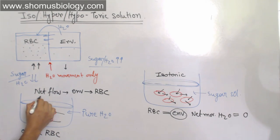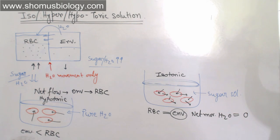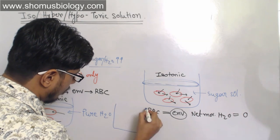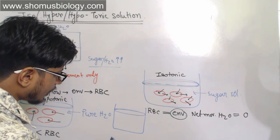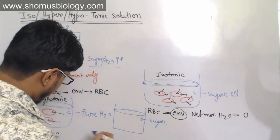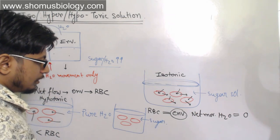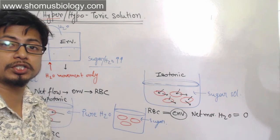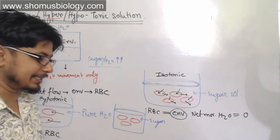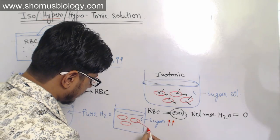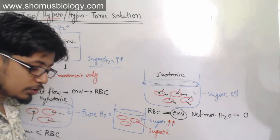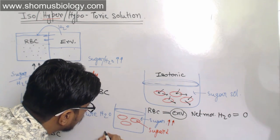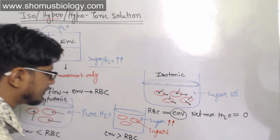That's regarding hypotonic solution. Now for a third occasion — hypertonic solution. 'Hyper' means more, so hypertonic means the concentration of sugar or solutes in the environment is more than that inside the cell. The sugar concentration is very high outside. There is also sugar inside the RBC, but less. In isotonic the concentration was same, but here the concentration of sugar in the environment is greater than that inside the RBC.